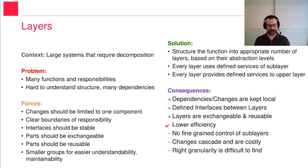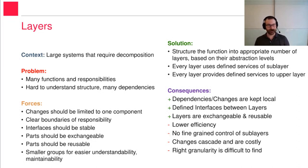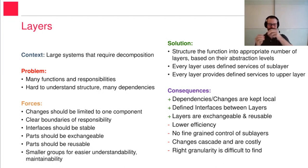But our efficiency is a little bit lower because we have to go over the whole stack of layers in order to execute some function. With every function call, with every wrapper and layer, efficiency will get lower. Also, we don't have fine-grained control over sub-layers. Think of communication where you want to change some TCP or MAC header in a packet — as an application it's difficult because you have to go layer by layer down to the actual MAC header. And as we stated, we should only use the services of the direct sub-layer.